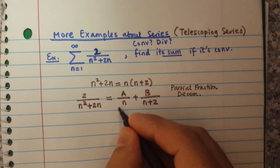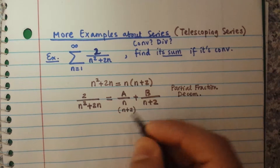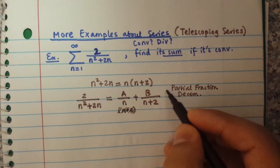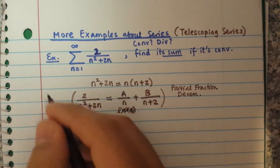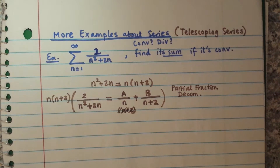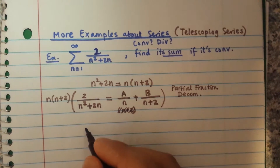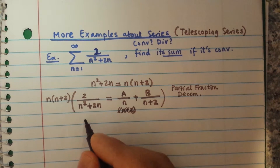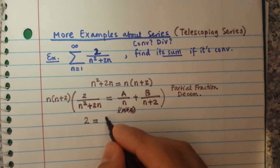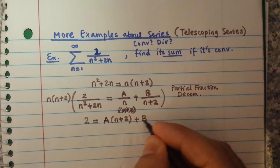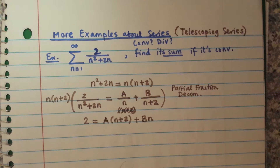Next, you multiply both sides by n times (n plus 2) to get rid of the denominator. If you multiply n plus 2 by A over n, the n's cancel, so you get: 2 equals A times (n plus 2) plus B times n.